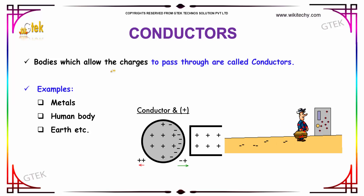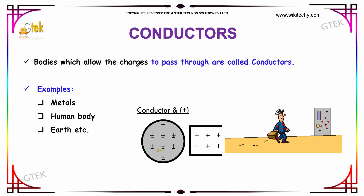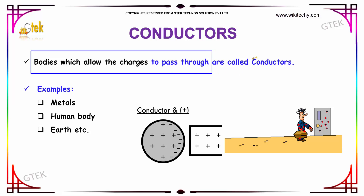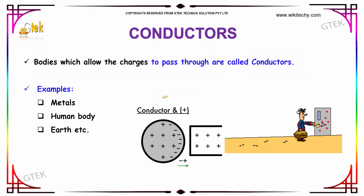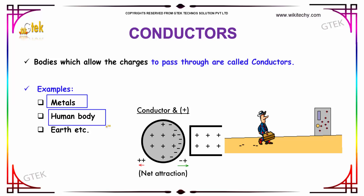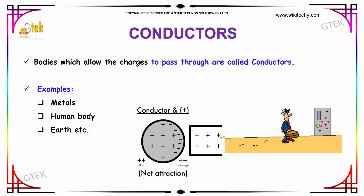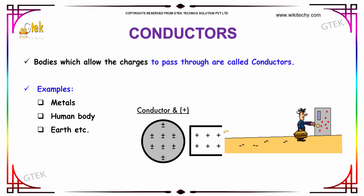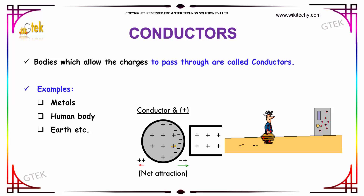Let us move on to the topic called conductors. In a simple definition, the bodies which allow the charges to pass through are called conductors. The examples for conductors are metals, human body, earth, and so on. You can find here some examples for conductors which have charges and allow them to pass through.